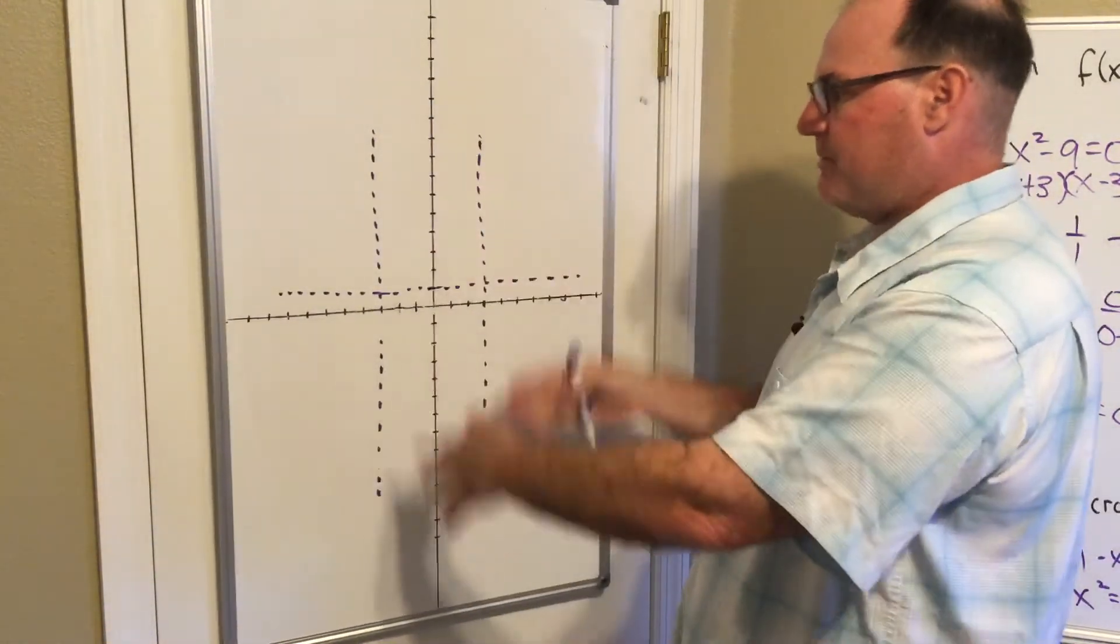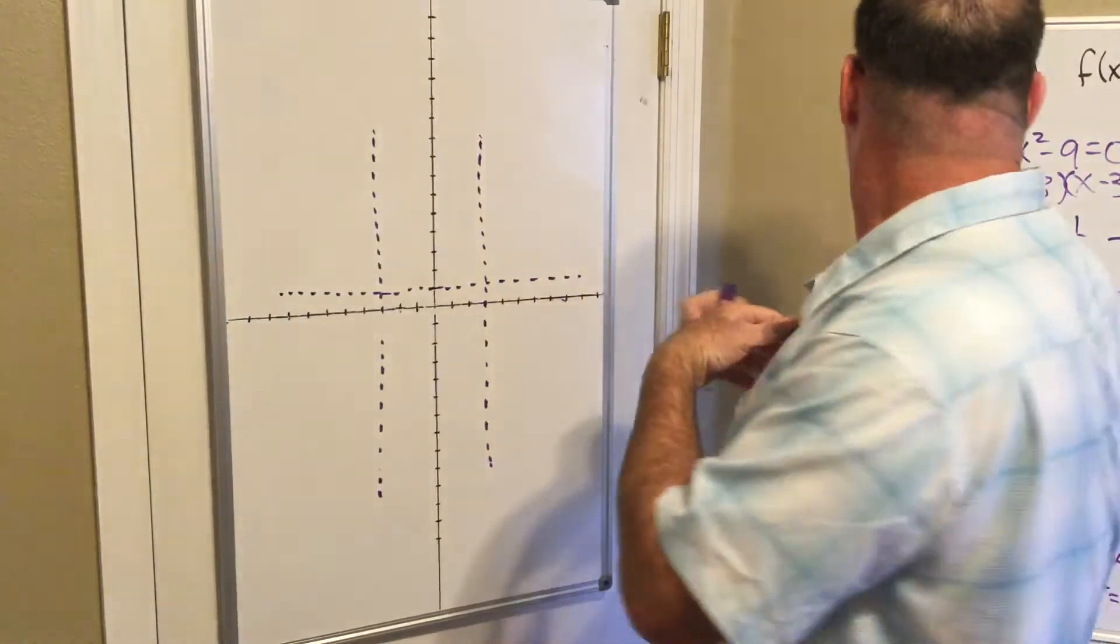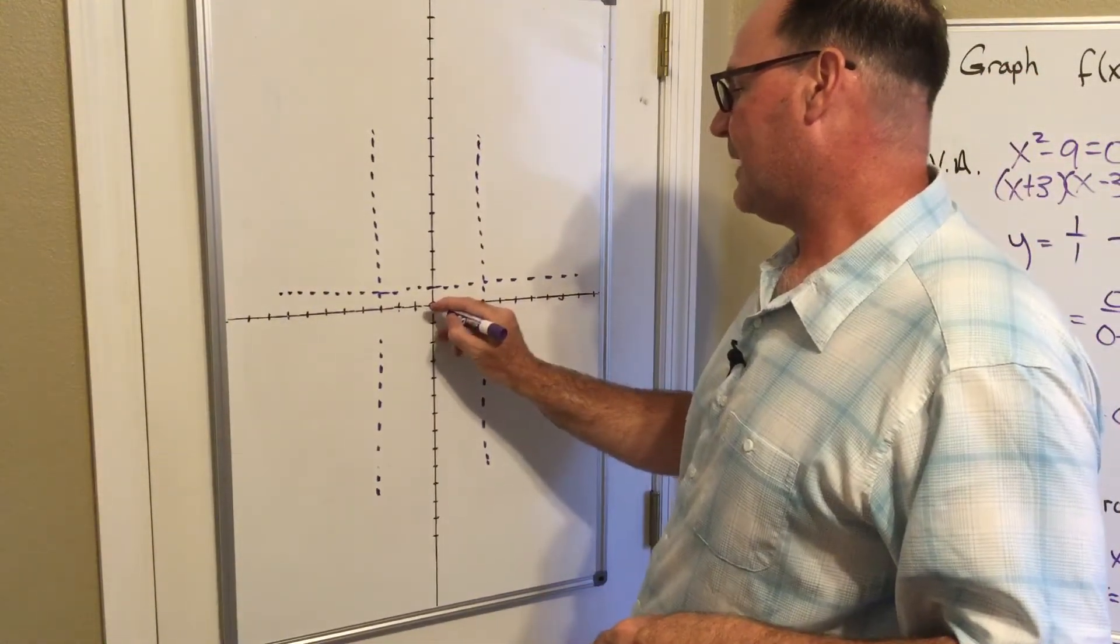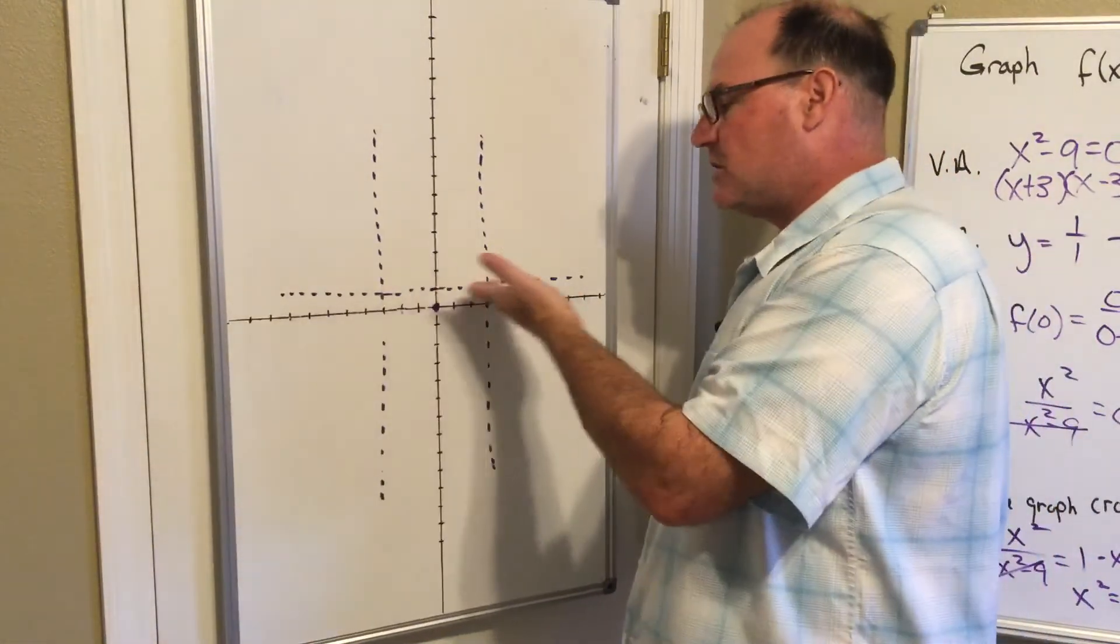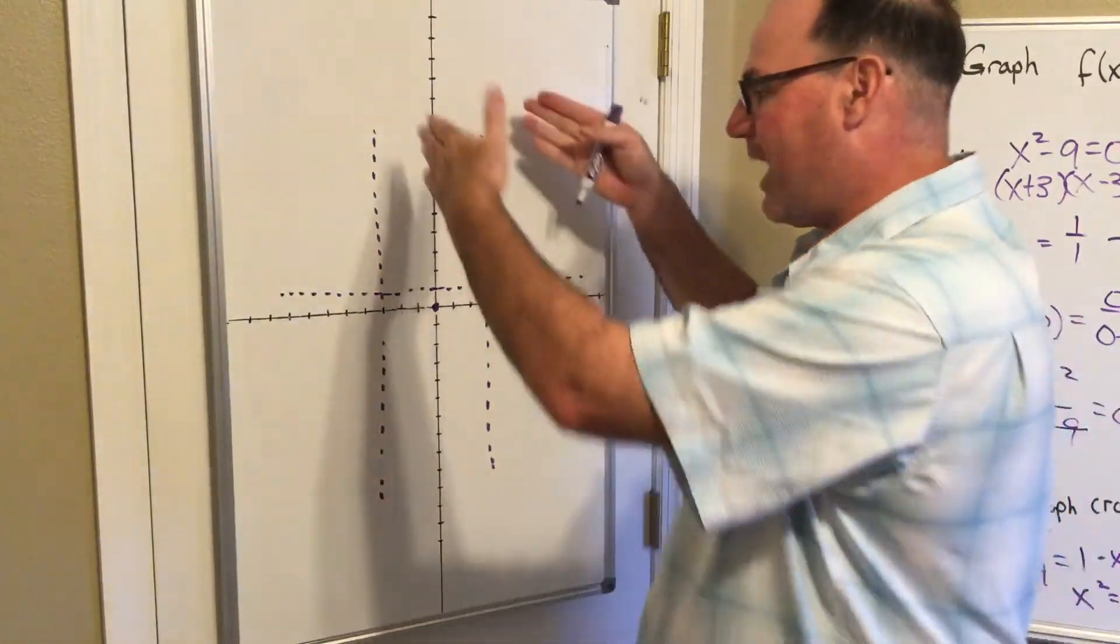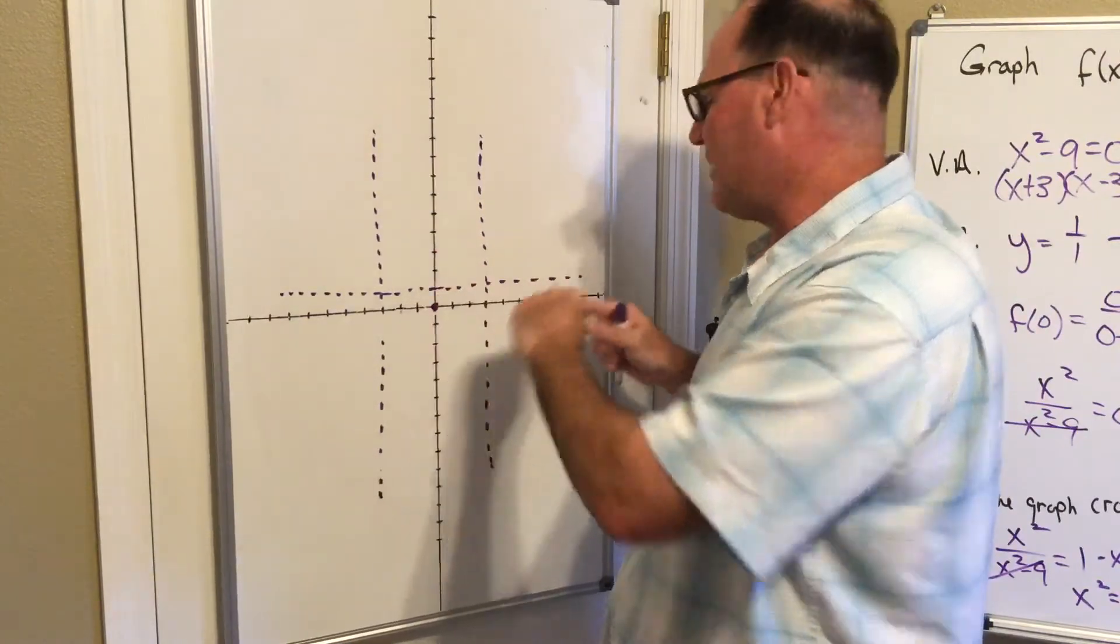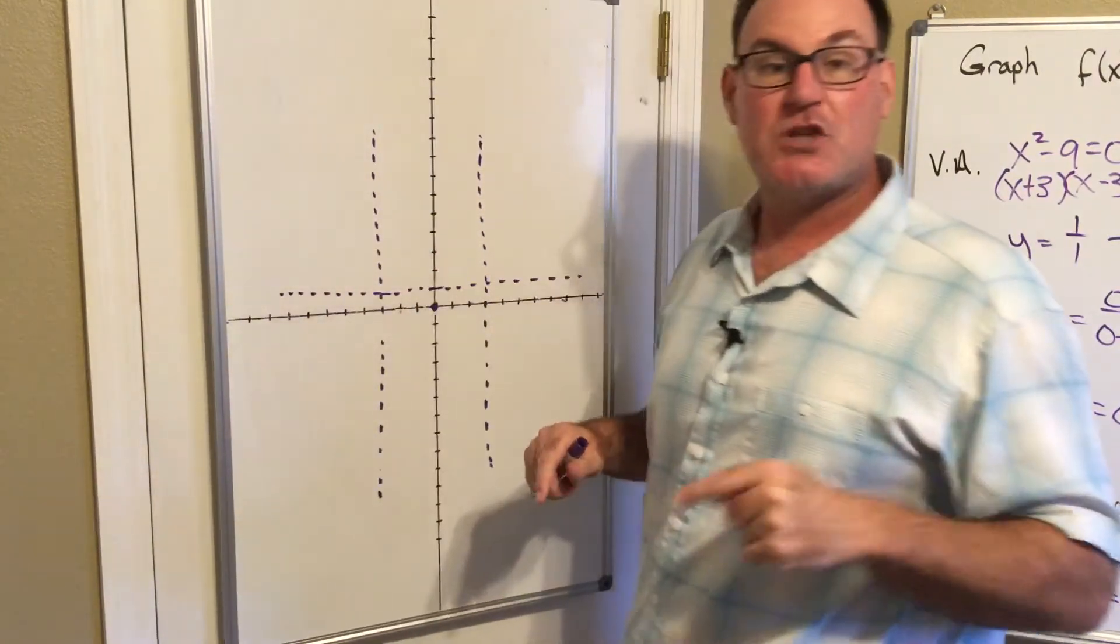Now my y-intercept and x-intercept are both the origin, and I know that the graph doesn't go through the horizontal asymptote. Graphs never go through the vertical asymptotes - that's always firm - and this one doesn't go through the horizontal either.